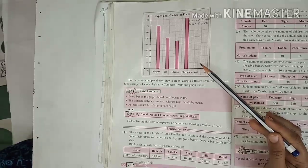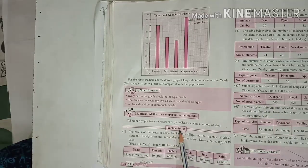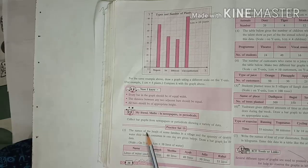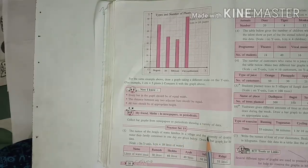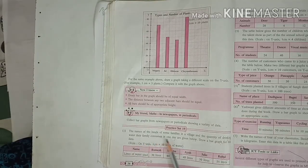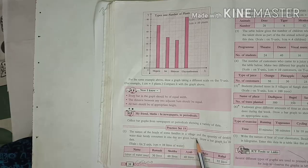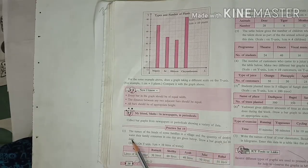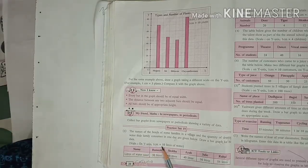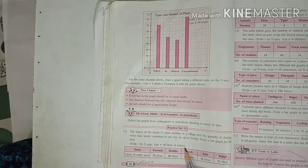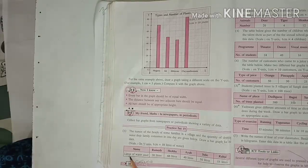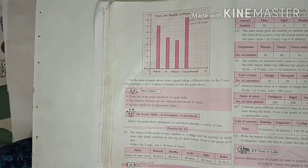Now in this video we are going to solve practice set 19. First example: the names of the heads of some families in a village and the quantity of drinking water their family consumes in one day are given below. Draw a bar graph for this data. Scale is also given here on y-axis, 1 cm is equal to 10 liters of water. In this chart, name of the family members are given and liters of water used by their family is also given.